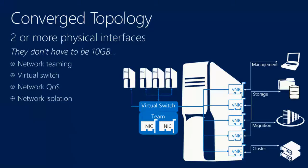So we've evolved, and now we've moved into a world where we can have things called converged networks — sometimes called software-defined networks, sometimes just called teams. In this environment we can have as few as two network adapters shared for all different workload types: management traffic, storage traffic, migration traffic, cluster traffic, and virtual machines all over a couple of interfaces.